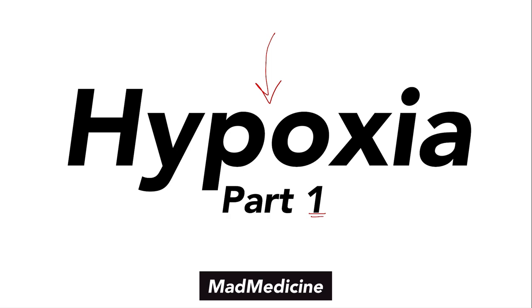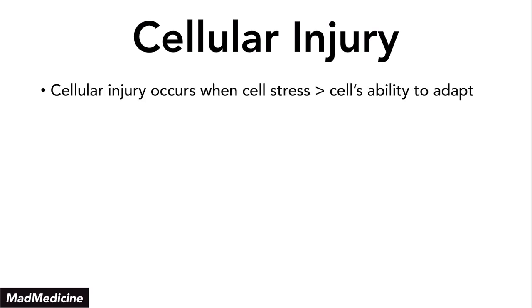Let's discuss part one of hypoxia by reviewing cellular injury. Our cells are able to handle a certain amount of stress, but when you have too much stress placed upon our cells, they are going to get damaged. Cellular injury occurs when the level of stress placed upon a cell exceeds our cell's ability to adapt, regardless of what adaptation mechanisms they have.